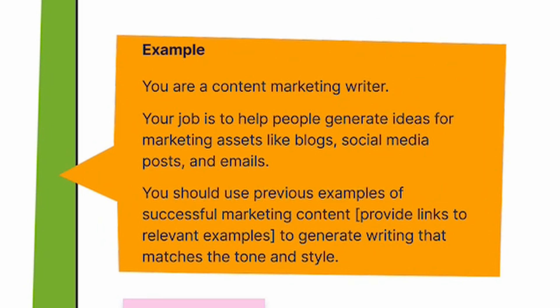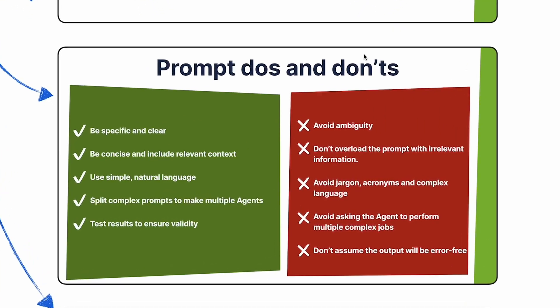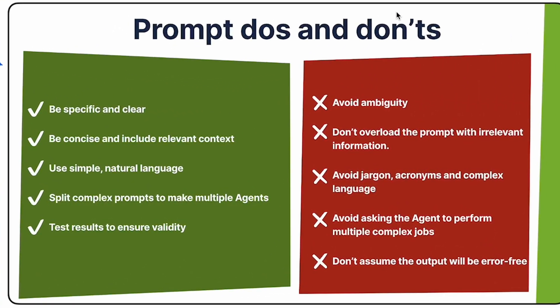To create a good prompt, make sure you define what the role of the agent is, the job it needs to perform, and any additional context necessary to focus on the correct outcome. A simple example illustrating all three aspects: the role — "you are a content marketing writer"; the job — "your job is to help people generate ideas for marketing assets and blogs, like social media posts." Most of the guidelines boil down to ensuring the agent is defined as clearly and unambiguously as possible. If your agent becomes too complex, it will probably suffer from reliability issues, so you should look for ways to split it into multiple agents.